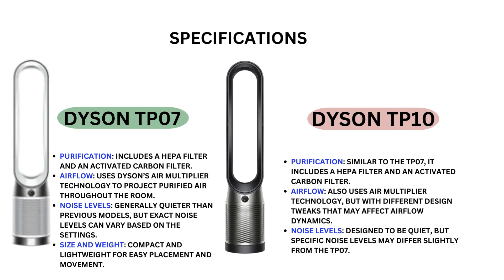Dyson TP-07 purification includes a HEPA filter and an activated carbon filter. Airflow uses Dyson's air multiplier technology to project purified air throughout the room. Noise levels are generally quieter than previous models, but exact noise levels can vary based on the settings.